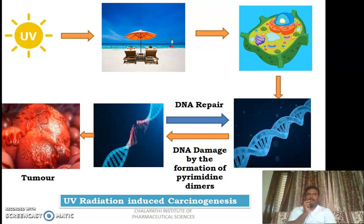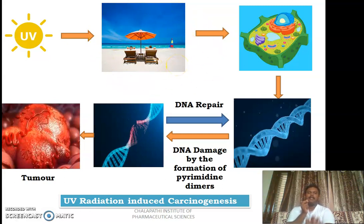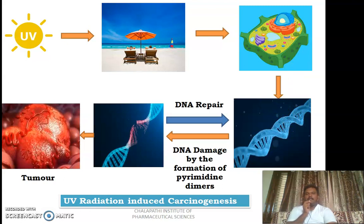Sunlight, welder's arc, and UV lamps are the major sources of UV radiation. Whenever an individual is chronically exposed to UV radiation, his skin cells — since UV radiation penetrates only up to the skin epidermis and dermis — get exposed to that UV radiation. Whenever the cell is exposed to UV radiation, the DNA in the skin encounters that UV radiation, resulting in DNA damage by the formation of pyrimidine dimers.